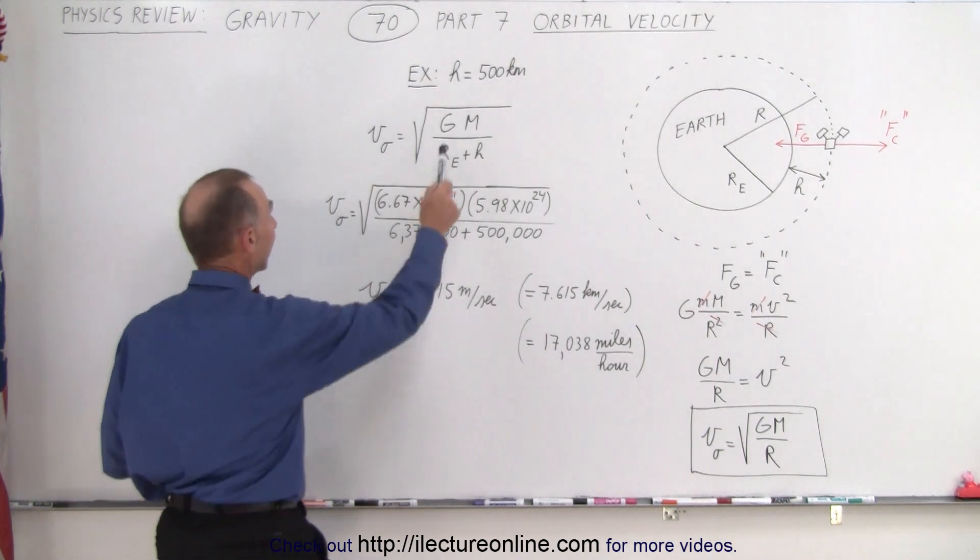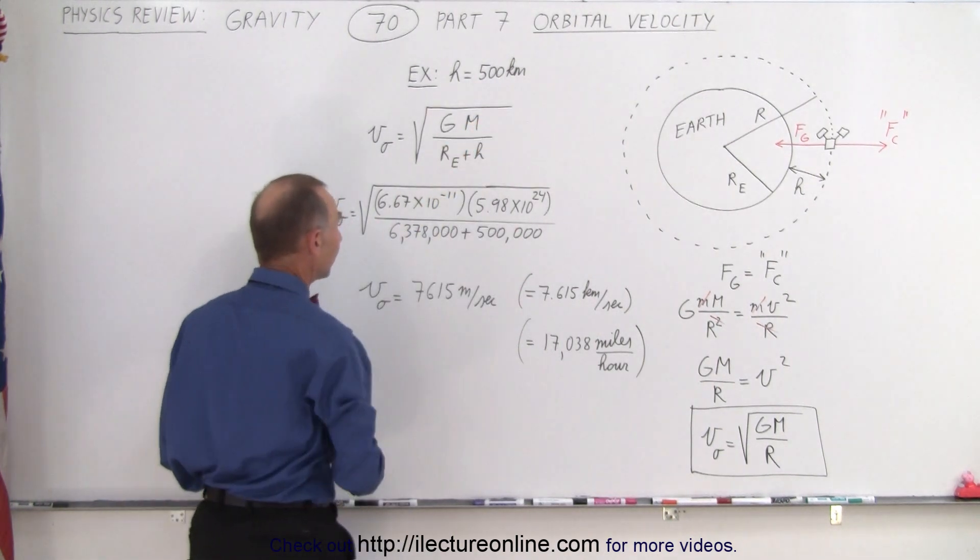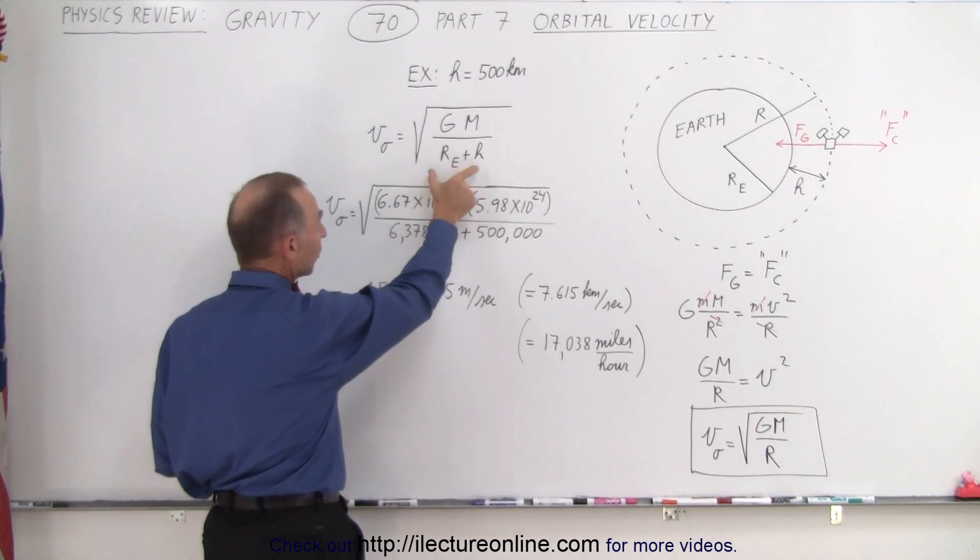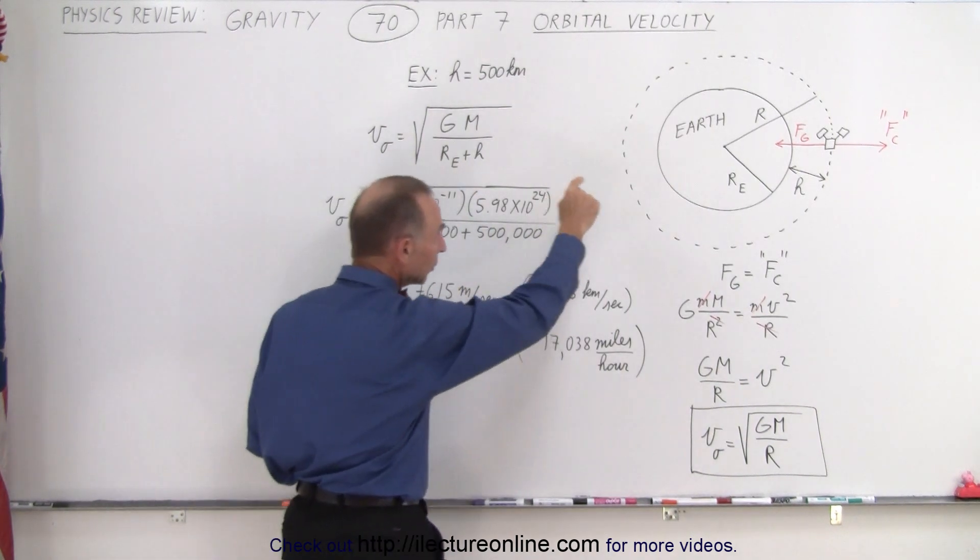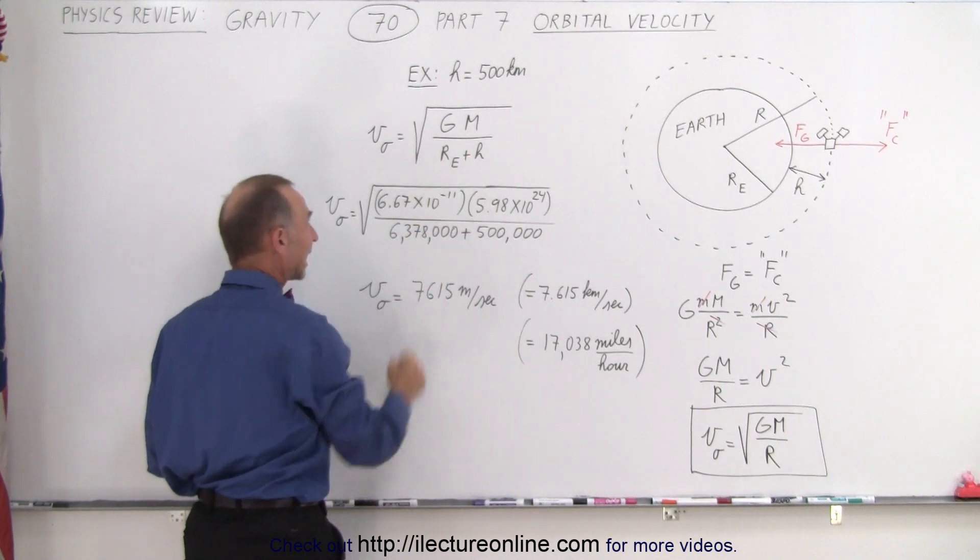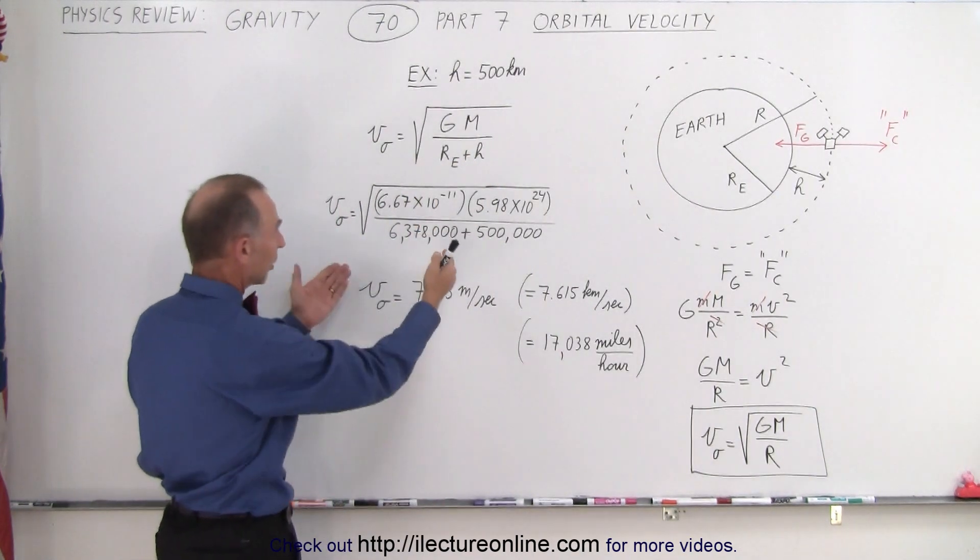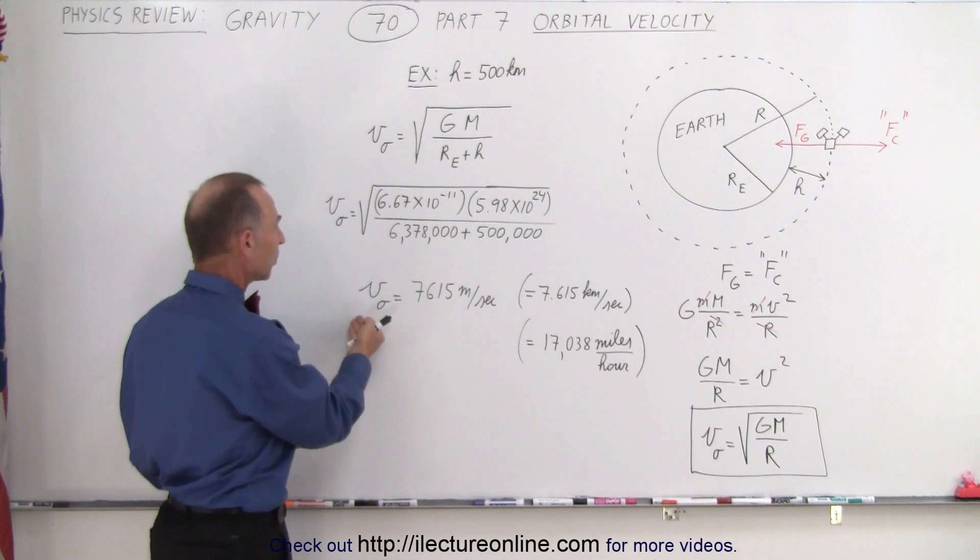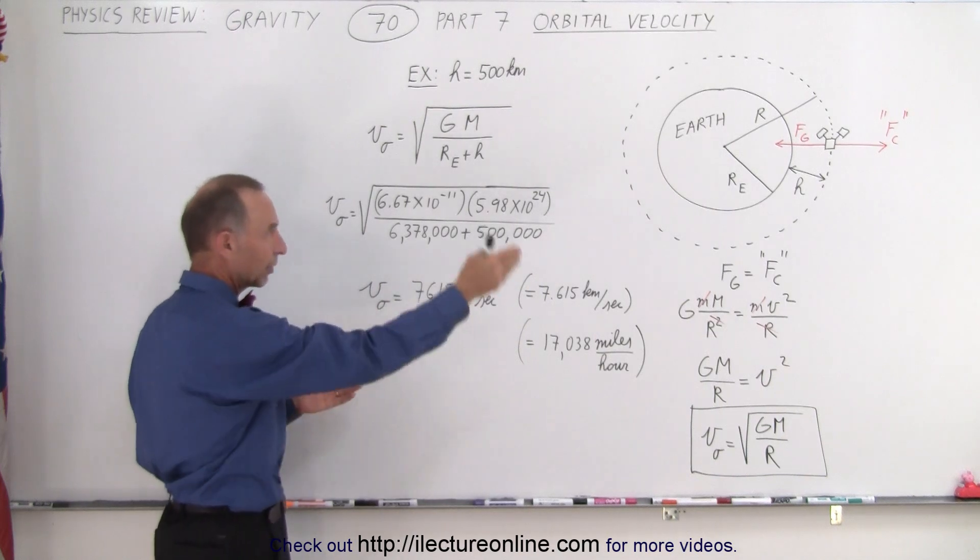As an example, let's say that the height is 500 kilometers above the surface. Then we plug that into the equation. Remember, the radius of the orbit is simply the sum of the radius of the Earth plus the height above the surface. We plug in the appropriate numbers, and we end up with the velocity of the orbital velocity of the satellite.